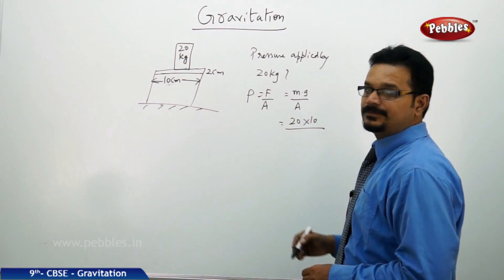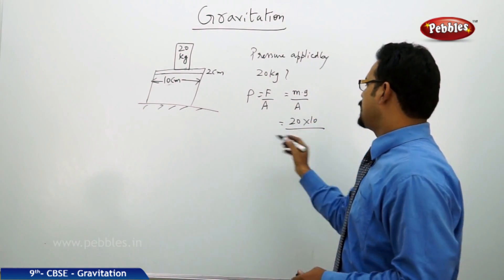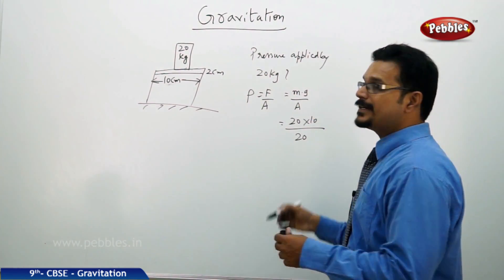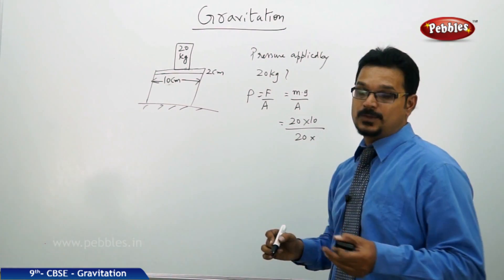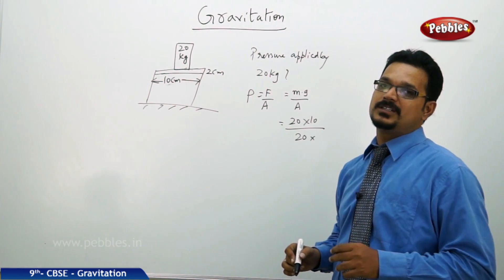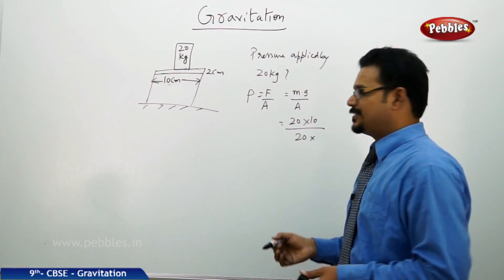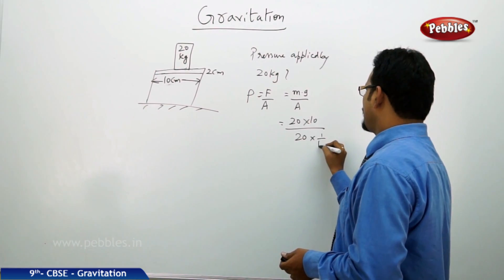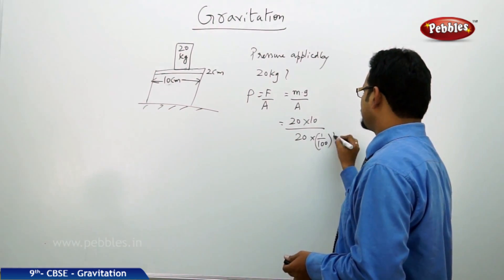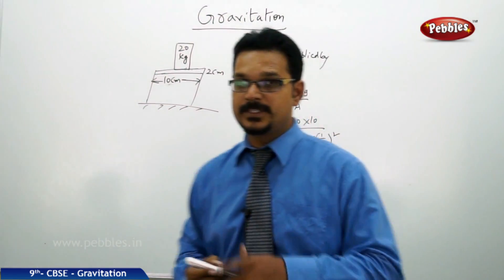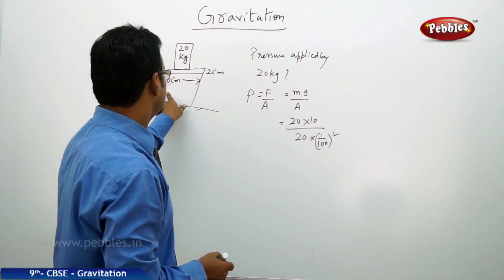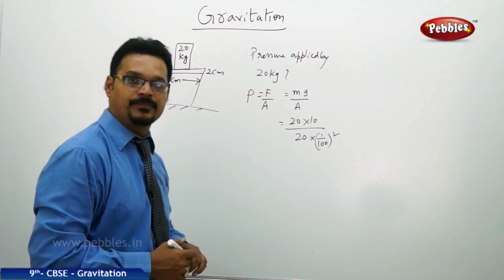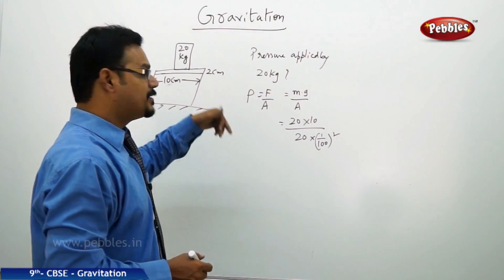And area is length times breadth: 10 × 2 = 20 centimeter square. Remember, it's centimeter square - you need to convert into meter square. So one centimeter equals one by hundred meters, therefore one by hundred square. Once I take the conversion, see area is length times breadth: 10 × 2 centimeter square.